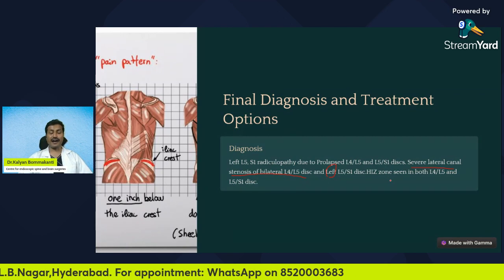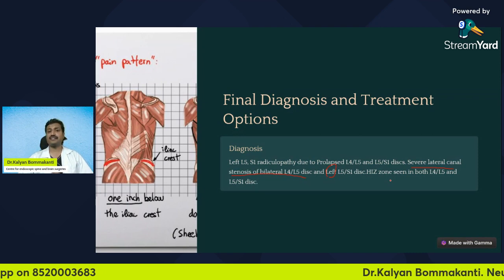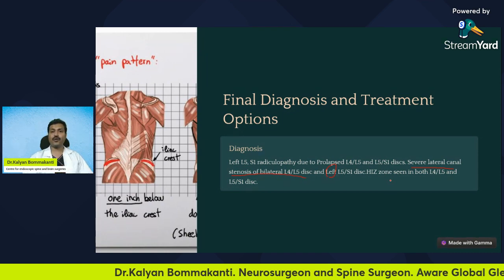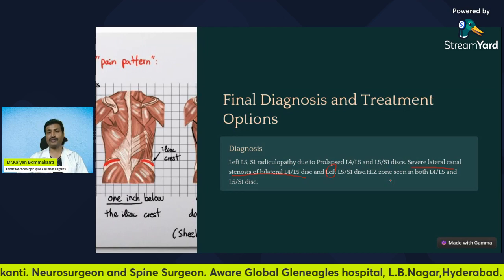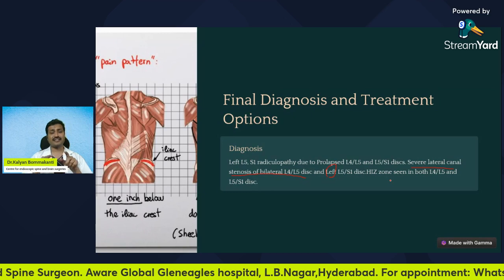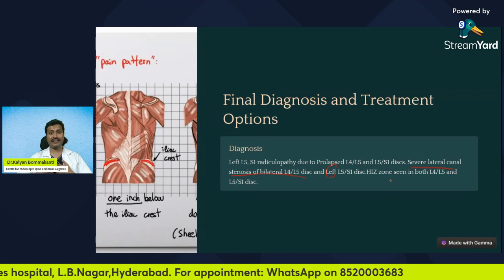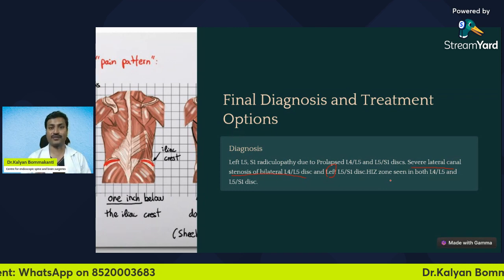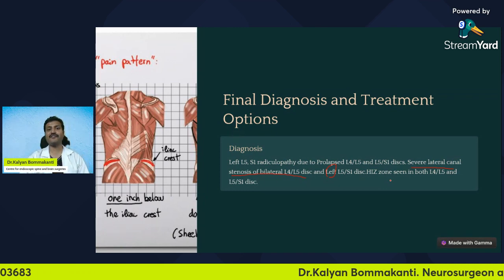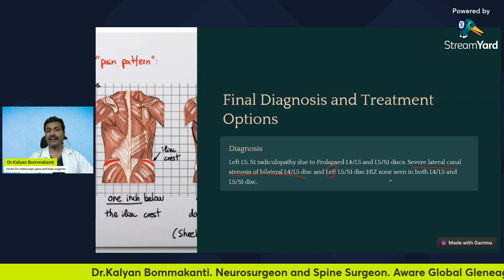Before I suggest any treatment, it's very important that my diagnosis is certain. In spine surgery, the stronger the diagnosis, the better the patient will improve. This is very difficult in spine. A wrong diagnosis is one of the most common causes of failure, and in spite of putting in a lot of effort, sometimes we go wrong in identifying the pain generators.